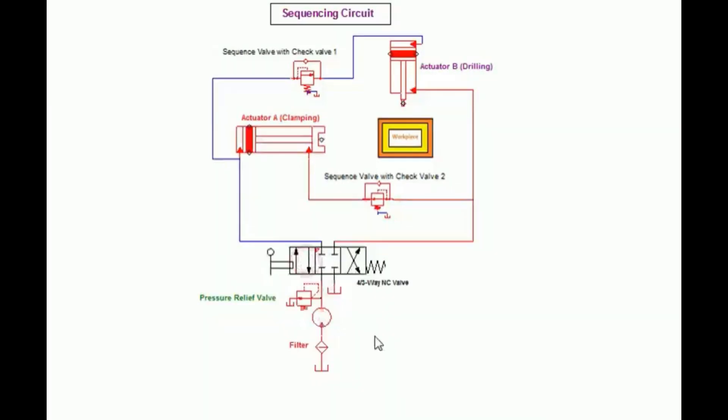Let us see the working of the circuit. It consists of reservoir, filter, pump, pressure relief valve, and direction control valve. Here a 4 by 3 normally closed direction control valve is used. First cylinder for clamping, this is the workpiece. This is the vertical cylinder for the drilling operation.